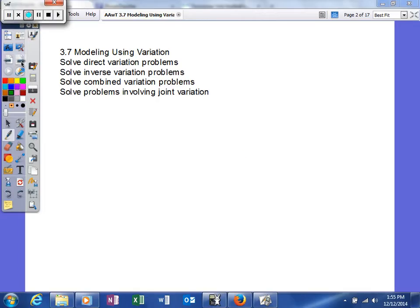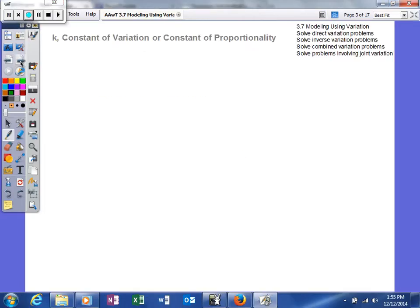Let's see if we can look at it. We're going to look at the different types. One thing we need to know about variation is that all of our variation problems have a K. This is basically the constant of variation or constant of proportionality.